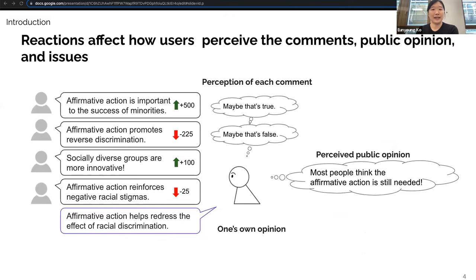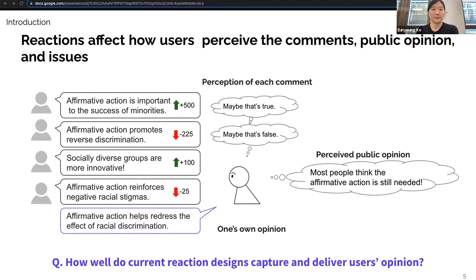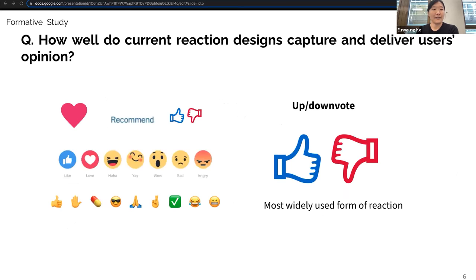Prior research has shown that reactions play an important role by influencing users' perception of each comment, perceived public opinion, and their opinion on the issue itself. Then we ask: if reactions are that important, how well do current reaction designs capture and deliver users' opinions? There are various designs of reaction buttons, but we start our investigation with up-down votes, which is the most widely used form of reaction.